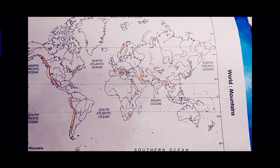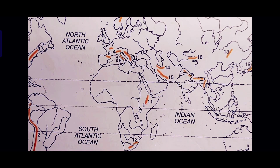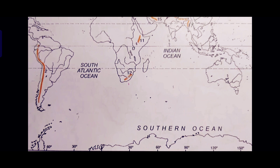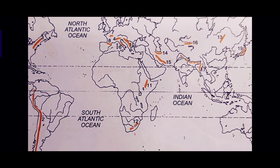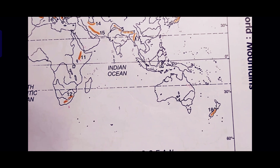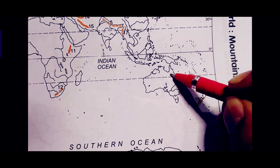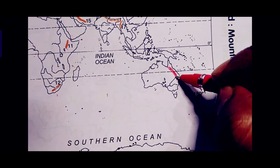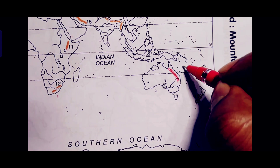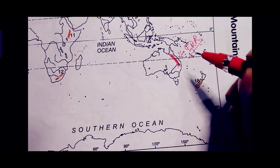In this map, number 11 is marked in Africa. In the index, number 11 is the Great Dividing Range, which should actually be marked in Australia — but here it is marked in Africa, which is wrong. To correct this, draw a line along the east coast of Australia in brown color, which indicates a mountain, and label it 'Great Dividing Range' — use the full form, not a short form.